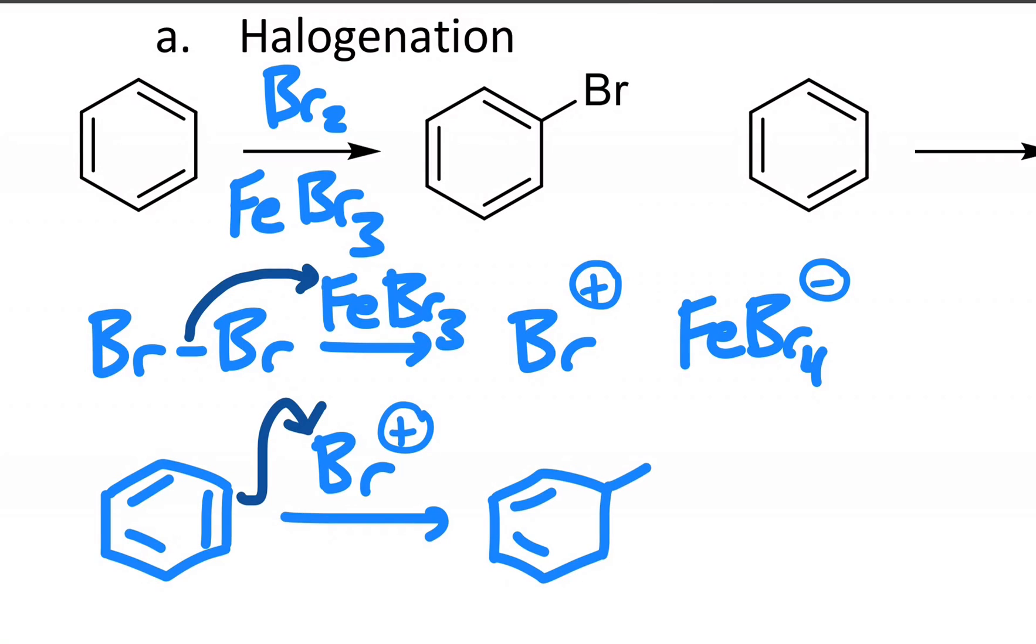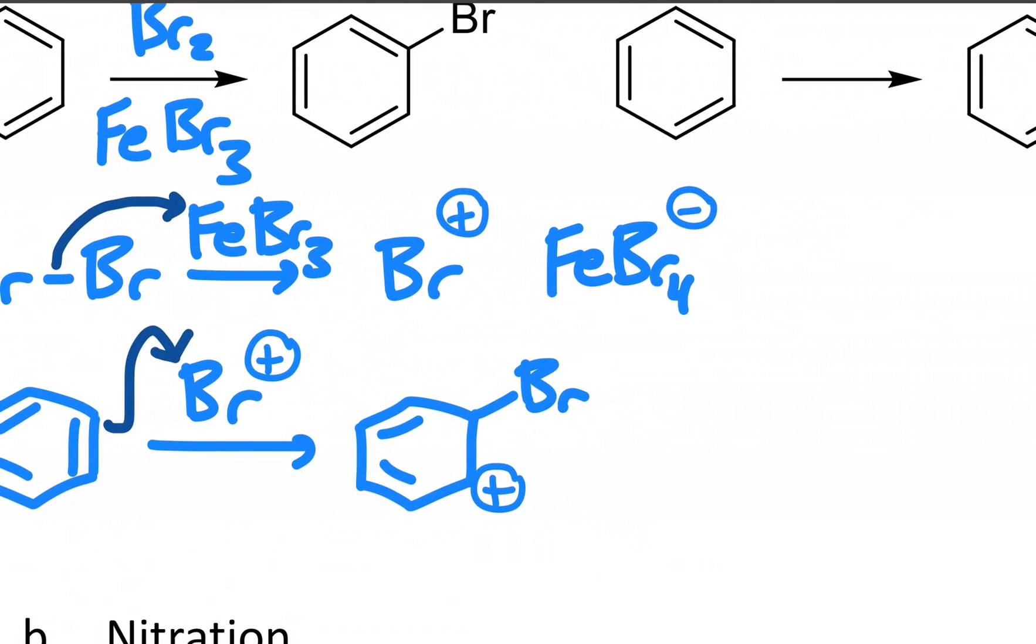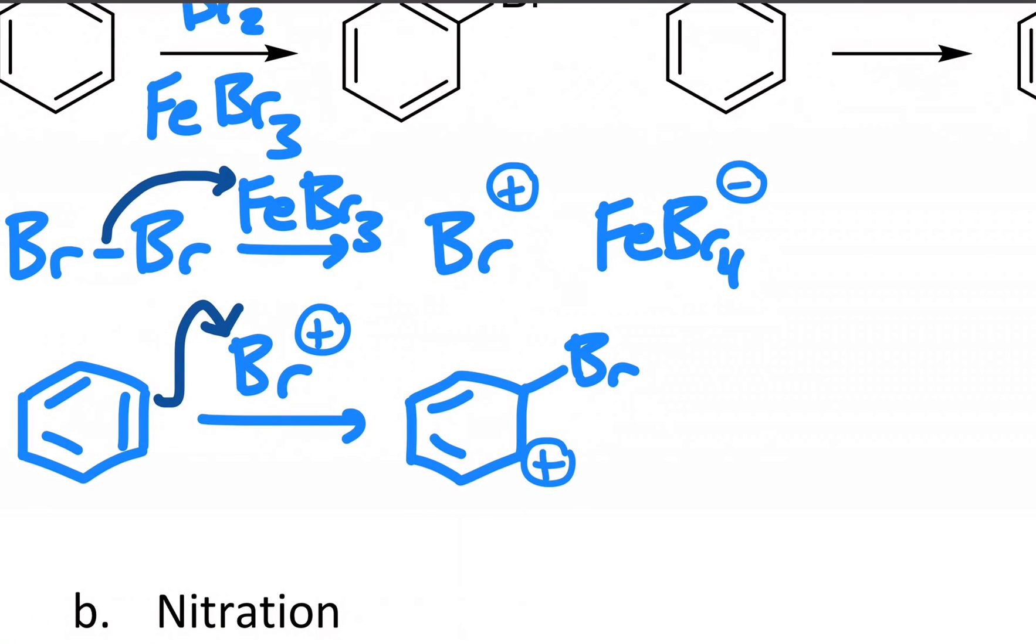You do what looks like the beginning of an addition reaction with a bromine on one carbon and a positive charge on the other. But as soon as the molecule does this, it has buyer's remorse. It really wants to go back to becoming aromatic.